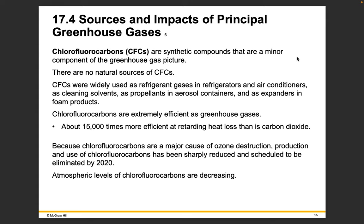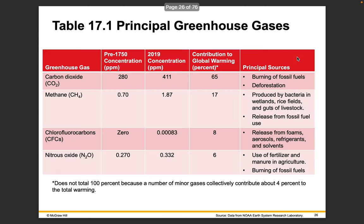Chlorofluorocarbons, or CFCs, are synthetic compounds that are a minor component of the greenhouse gas picture — there are no natural sources of CFCs. They were widely used as refrigerant gases, cleaning solvents, propellants in aerosol containers, and expanders in foam products. CFCs are extremely efficient greenhouse gases — about 15,000 times more efficient at retarding heat loss than CO2. Because CFCs are a major cause of ozone destruction, production has been sharply reduced and scheduled to be eliminated by 2020, and atmospheric levels of CFCs are now decreasing. There's a summary table of different greenhouse gases, their pre-industrial revolution levels, their current levels, and their contributions to global warming — a great table to study and be able to produce from memory.